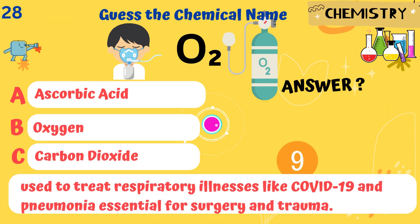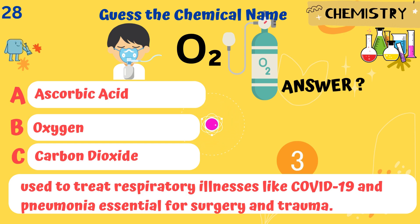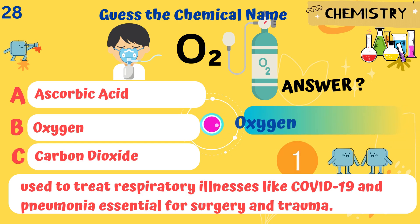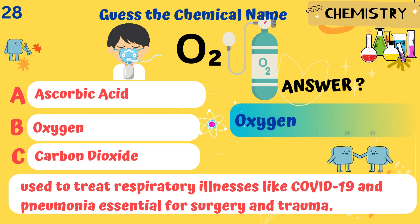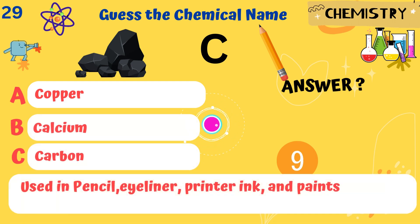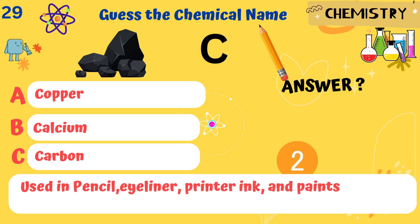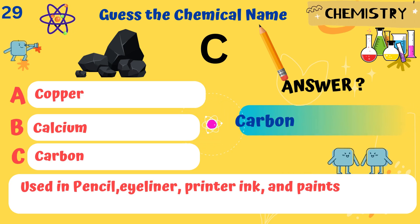O2. It is used to treat respiratory illnesses like COVID-19 and pneumonia, and is essential for surgery and trauma. Answer: Oxygen. C. It is used in pencil eyeliner, printer ink, and paints. Answer: Carbon.